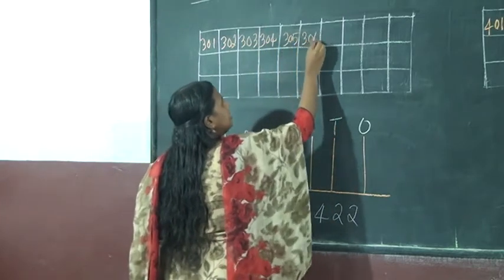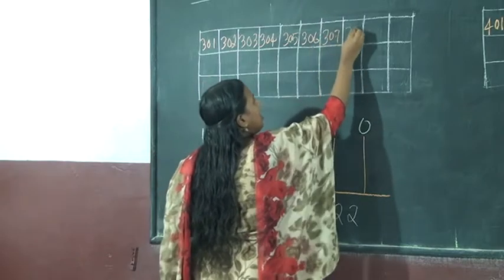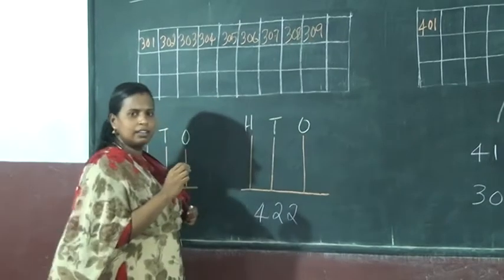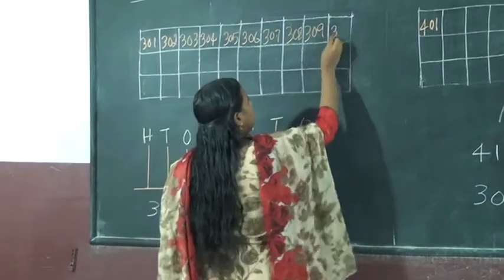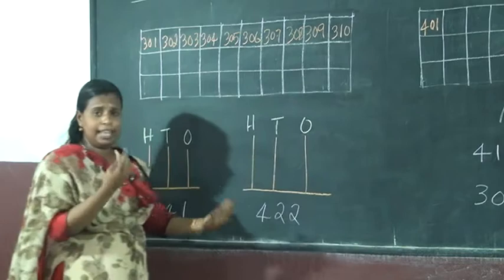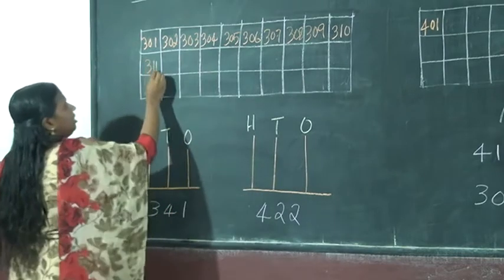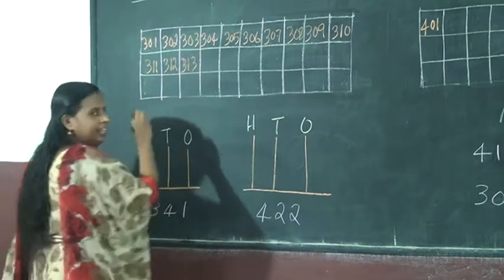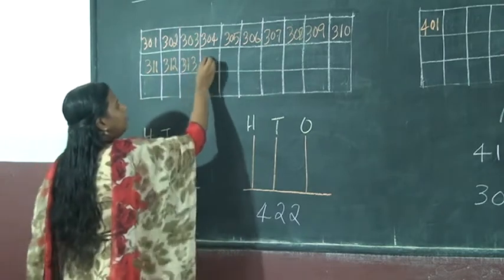Three hundred and ten. Okay, then 311, 312, 313, 314. Say them both. All right, we're going to do it. Okay, are you ready? 315, 316.